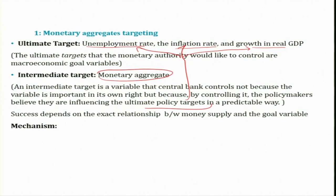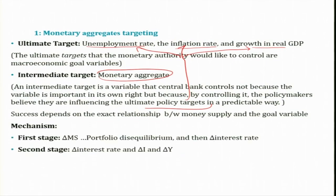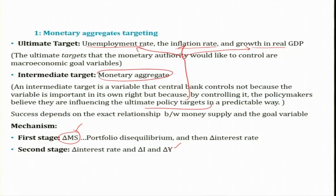The success of monetary aggregate targeting depends on the exact relationship between money supply and the goal variables. The question is: how does a change in monetary aggregates — targeting the money supply — affect the final variable, which is output? When output increases, employment also increases, since they are highly correlated. So the key question is how changes in money supply affect the final ultimate targets.